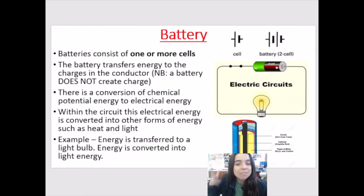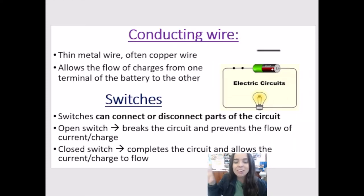So here's some information about batteries, which we have discussed. There's a symbol for a cell, and then for two cells, for example, which can make up a battery. Then we've got our conducting wire. We've got switches. Open switches obviously breaks the circuit. It prevents the flow of charge. If we want an electric circuit to function, we need to close the switch to complete the circuit.